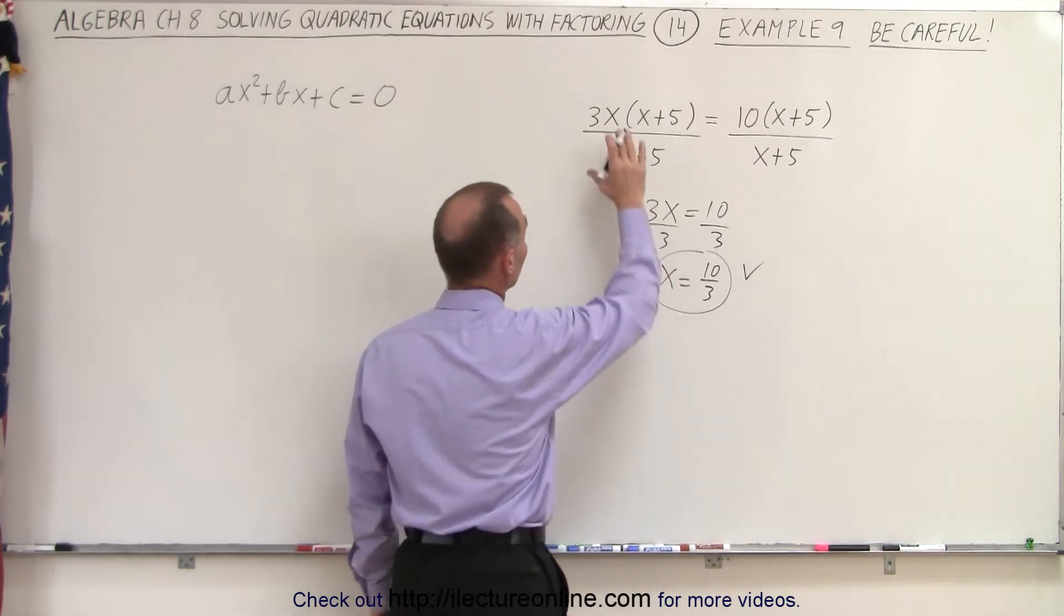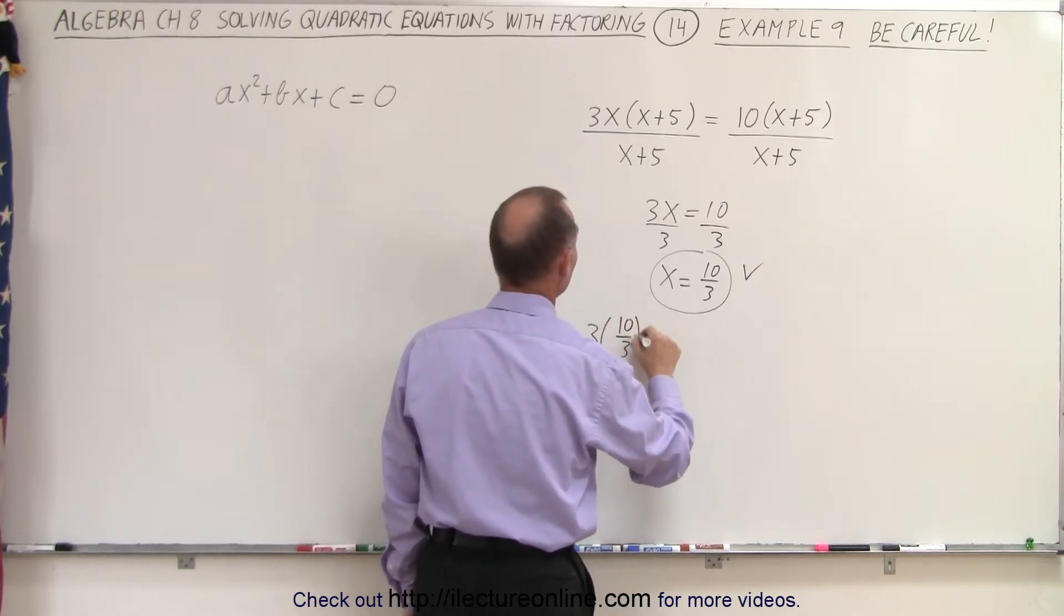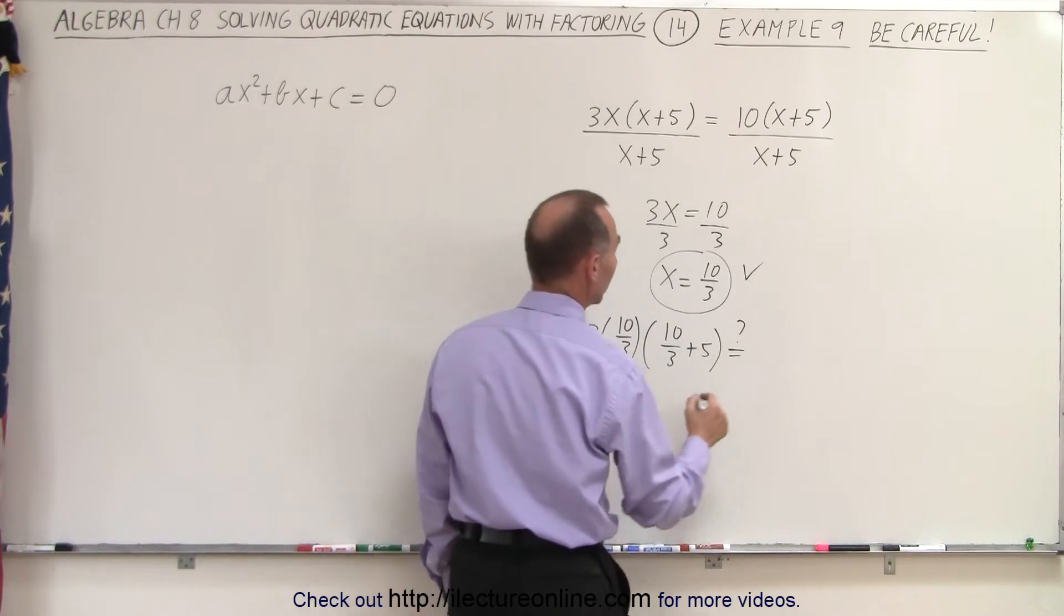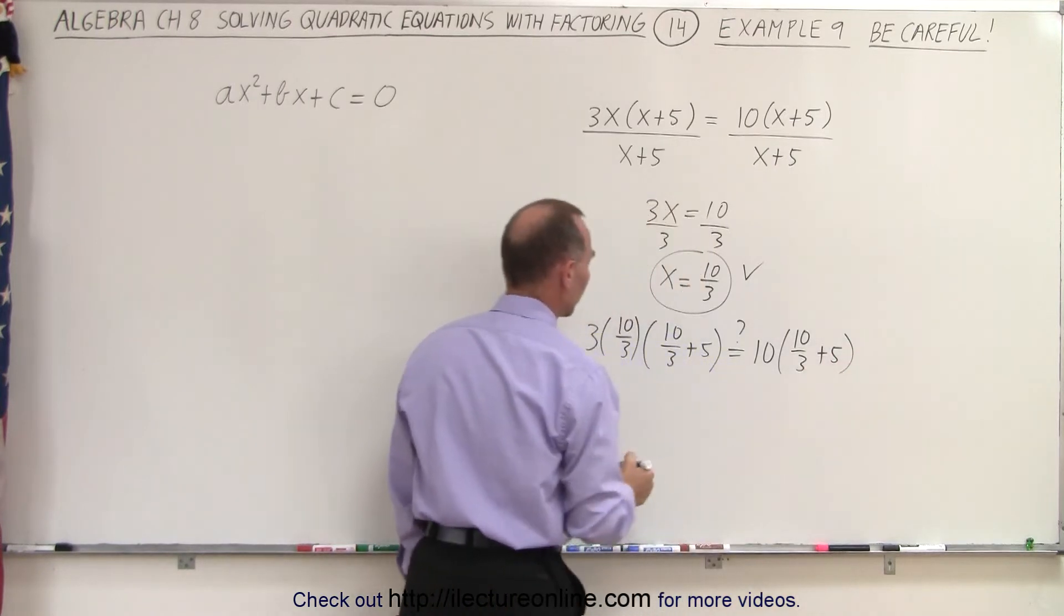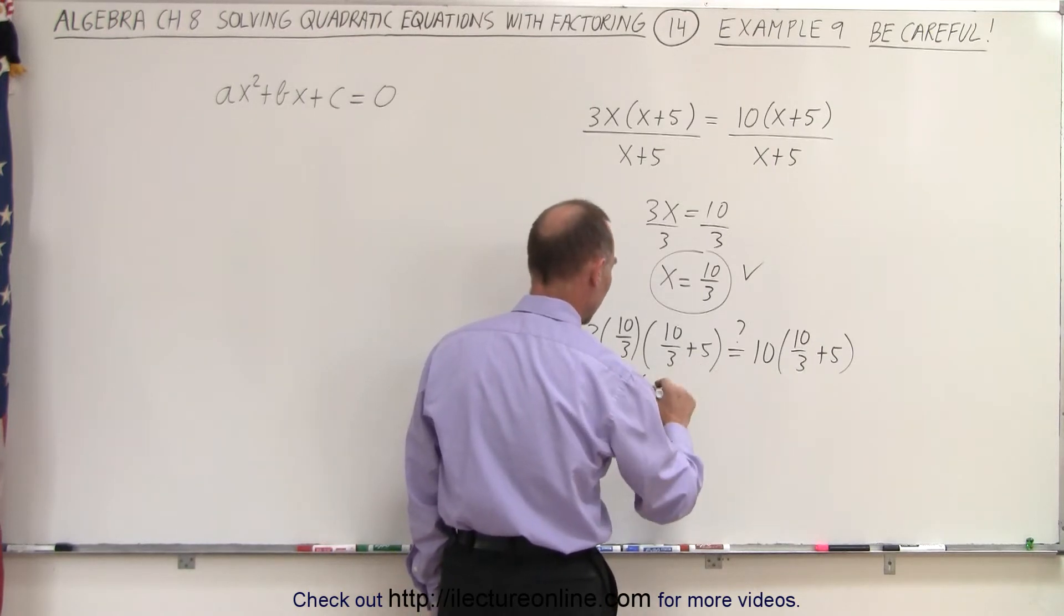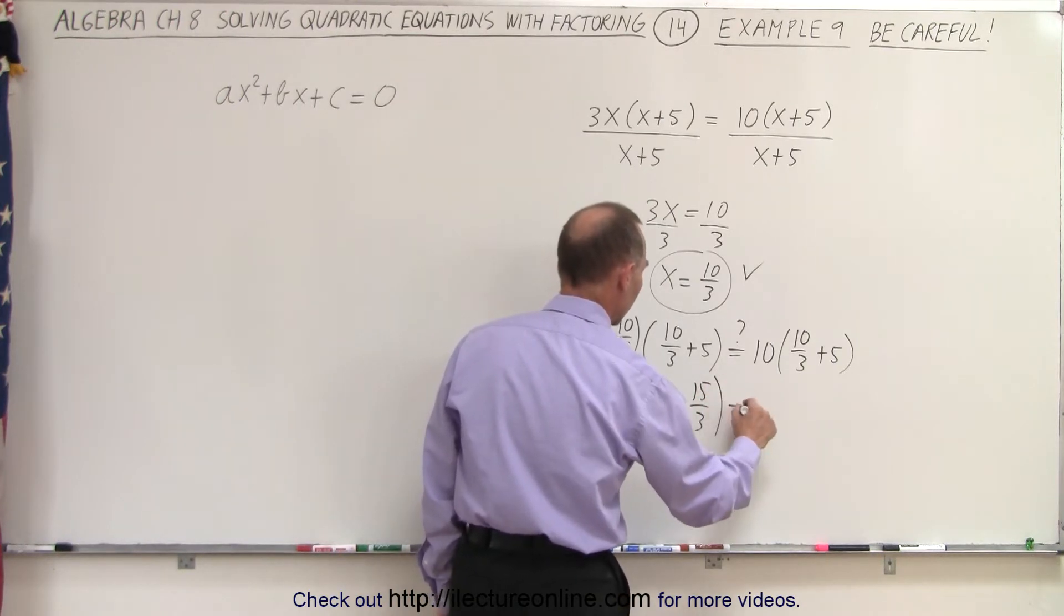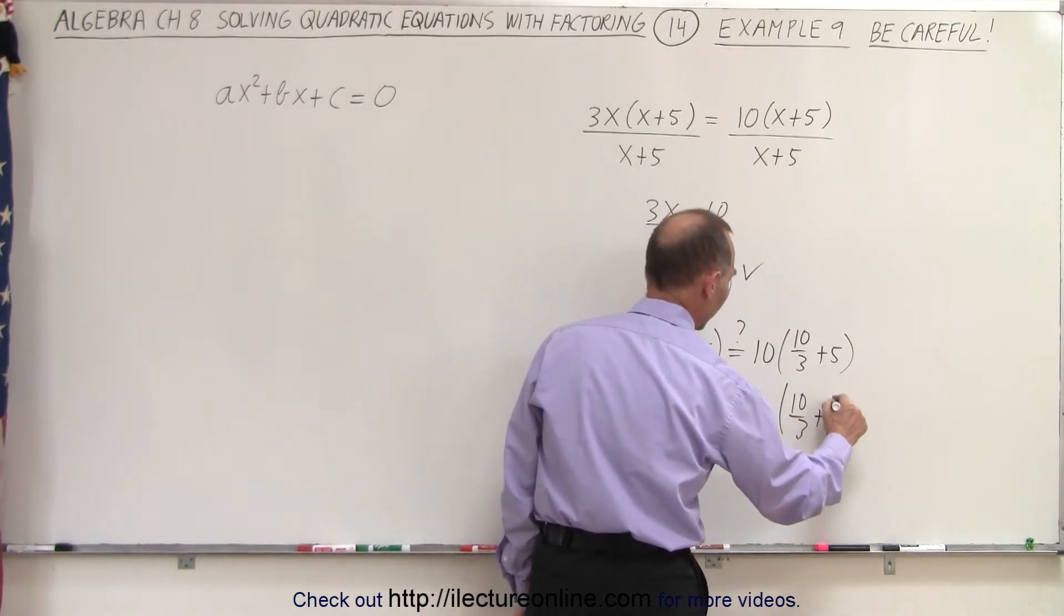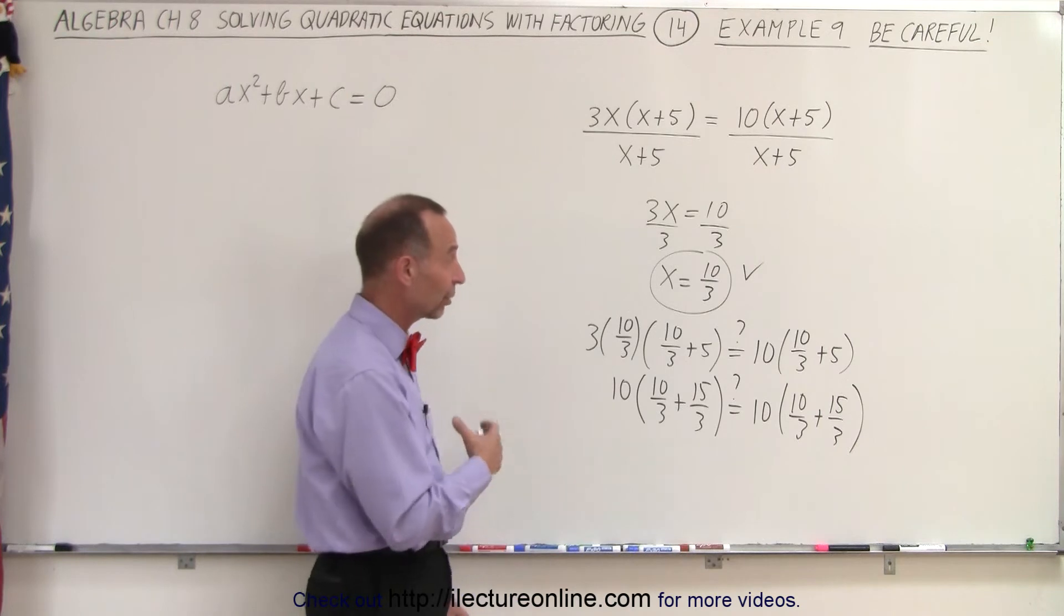Well we can check by plugging that back in the original equation. So let's see what we get. So we have 3 times 10 divided by 3 multiplied times 10 divided by 3 plus 5. Is that question mark equal to 10 times 10 divided by 3 plus 5? Well what I can do here is the 3s cancel out. So I get 10 times on the common denominator. I get 10 over 3 plus 15 over 3. Is that question mark equal to 10 times that would be 10 over 3 plus 15 over 3? And clearly you can see that the left side equals the right side. So we did indeed find the correct solution.